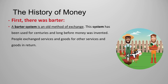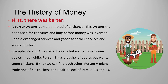The history of money: first there was barter. A barter system is an old method of exchange that has been used for centuries. Long before money was invented, people exchanged services and goods for other services and goods in return. For example, person A has two chickens but wants apples, while person B has a bushel of apples but wants chickens. If the two can find each other, person A might trade one chicken for a half bushel of person B's apples.